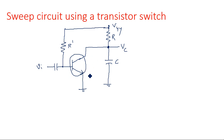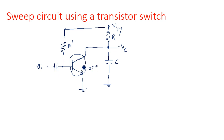Initially the transistor is in off state. First I will explain what happens with respect to the capacitor charging and discharging with respect to the transistor on and off states. Suppose if the transistor is in off state — let us assume in the beginning transistor is in off state — what is the status of the capacitor?